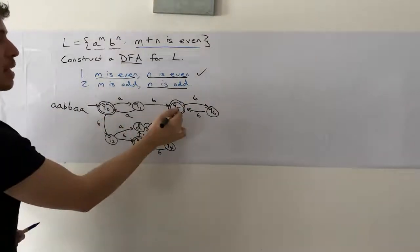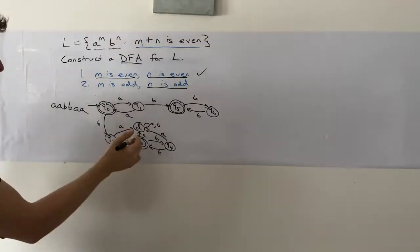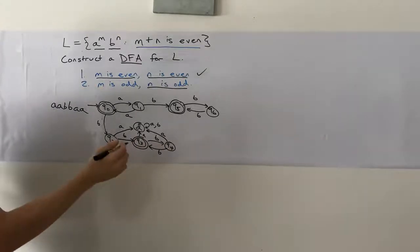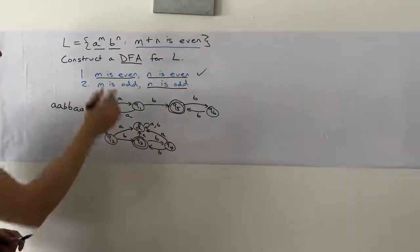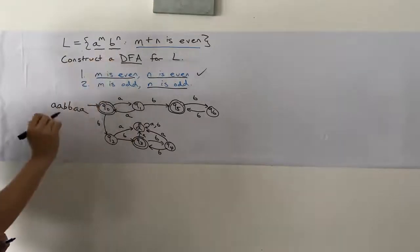And like before, like these states down here, we need to have transitions on A that go to a dead state because we want to have a string that's not in this language to be not accepted.